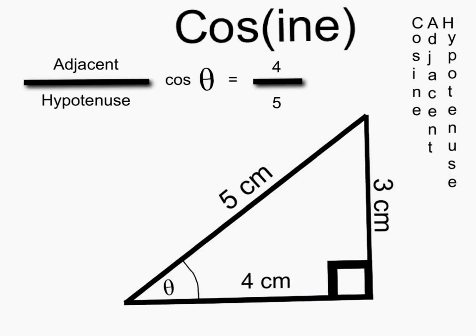Cosine. Cosine is the adjacent side divided by the hypotenuse. In this case, cosine theta is 4 over 5. An easy way to remember, cosine is CAH, which stands for cosine adjacent hypotenuse.